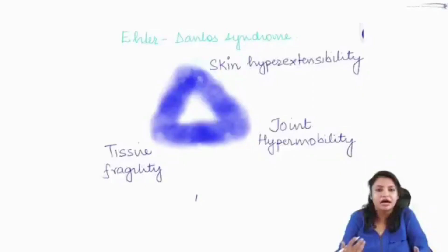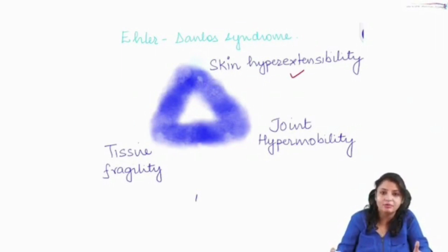The majority of cases involve a defect in collagen 1, collagen 3, and collagen 5. These collagens are extensively present in skin and joints. The typical manifestations are hyperextensibility of the skin, hypermobility of the joint, and tissue fragility. Some tissues rich in these collagens — like blood vessels, uterus, and intestines — can also present with tissue fragility. So EDS is basically a triad: skin hyperextensibility, joint hypermobility, and tissue fragility.